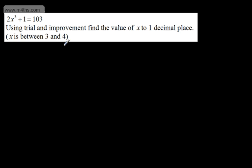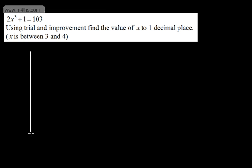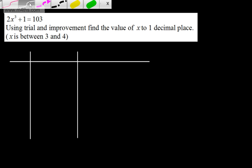We won't always be given this information, so sometimes we're going to need to find a starting point. In order to answer this question, I'm just going to draw up a little table. I'm going to have my first column, which is going to be the value of x. The second column, which is going to be the answer. And the third column, which is going to be a comment. The comment is too big or too small.